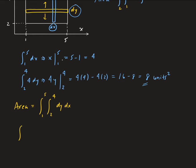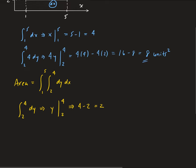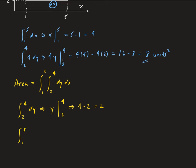First, evaluate the integral from two to four of dy. That gives us y evaluated from two to four, which is four minus two, equaling two. Now we take the integral from one to five of two dx. That gives us two x evaluated from one to five: two times five minus two times one, which is ten minus two, giving us eight.